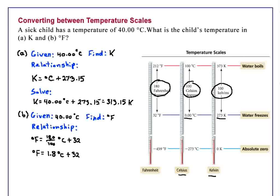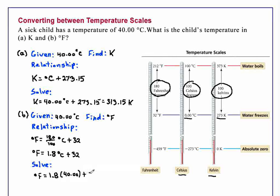So we're ready to solve. Degrees Fahrenheit equals 1.8 times 40.00 degrees Celsius plus 32, and this gives us a temperature of 104.00 degrees Fahrenheit.